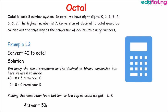Now we have an example here. Let's convert 40 to octal. We simply apply the same procedure as the decimal to binary conversion but here we use 8 to divide. Now 40 divided by 8 we get 5. The remainder is 0.